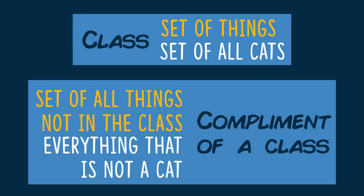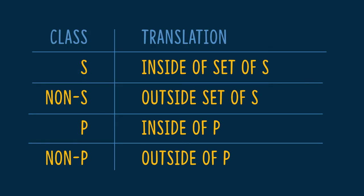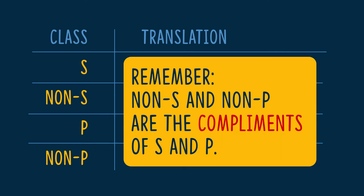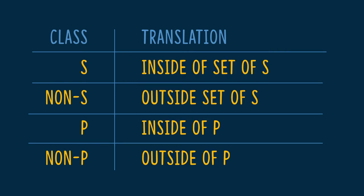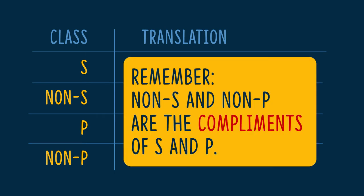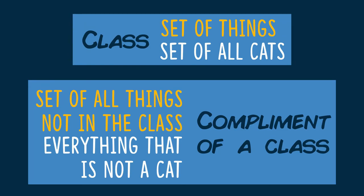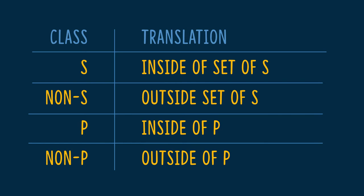Now let's talk about classes — sets, the predicate class, or the subject class. When we do our transformations, we end up with four possible classes. First is S, the subject class. Second is non-S, which is the complement of S. Then we have P, the predicate class. And then we have non-P, which is the complement, or everything outside of P. For S, we say inside of S — that's something inside that circle in the Venn diagram labeled S. For non-S, the best way to think about that is outside of S. For P, that's easy — inside of P. And using the same pattern, non-P is just outside of P.